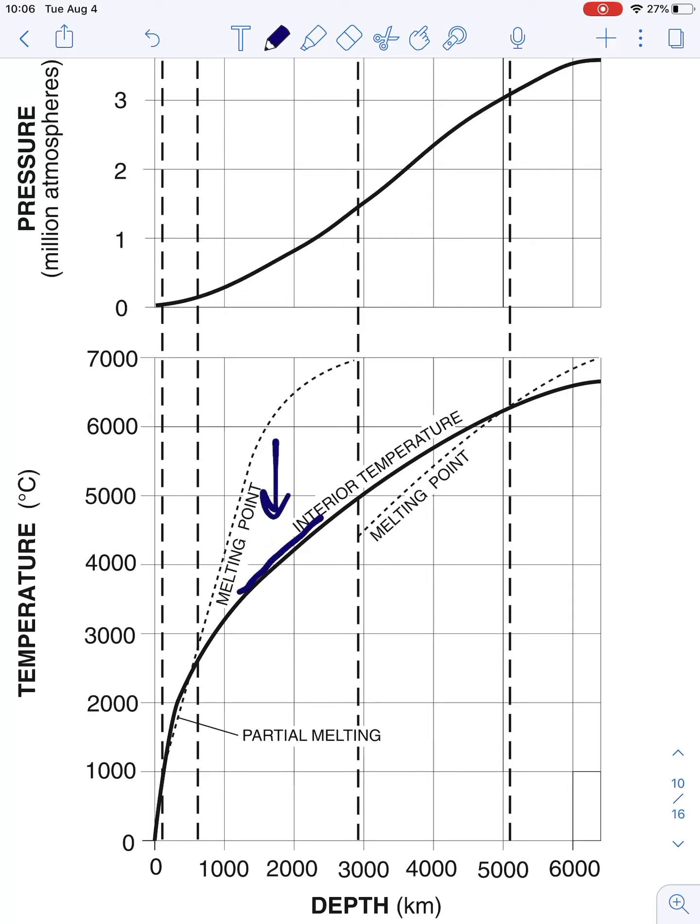So wherever we see an interior temperature that is below the melting point, that tells us that this layer is a solid. Wherever we see the interior temperature above the melting point, that tells us this layer is a liquid.